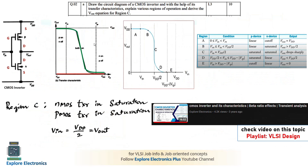The next question is the CMOS inverter: draw the circuit diagram and, using its transfer characteristics, explain the different regions of operation and derive the Vout equation for region C. The circuit requires one P-transistor and one N-transistor; clearly mark drain, source, and gate. Plot Vout on the y-axis and Vin on the x-axis. When Vin = 0, the output is maximum — Vout = VDD — because the P-transistor is on.